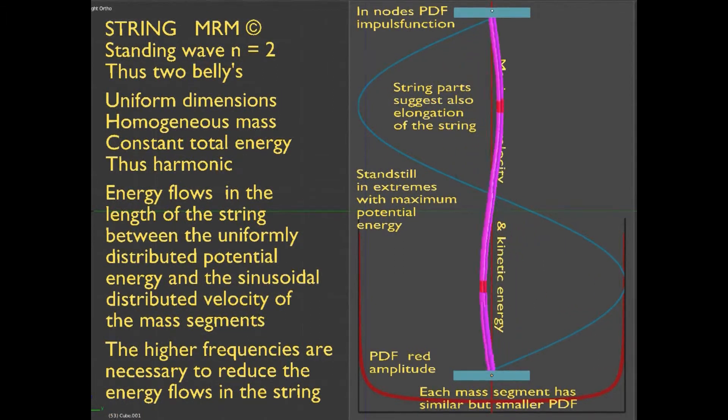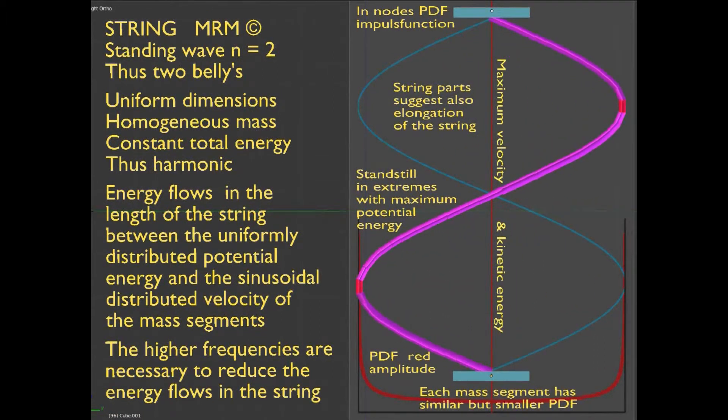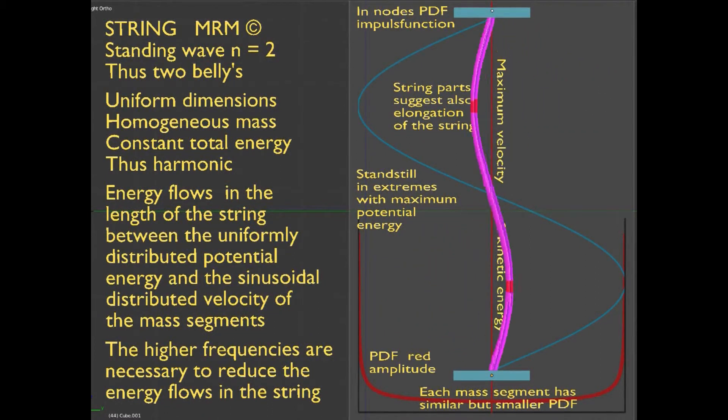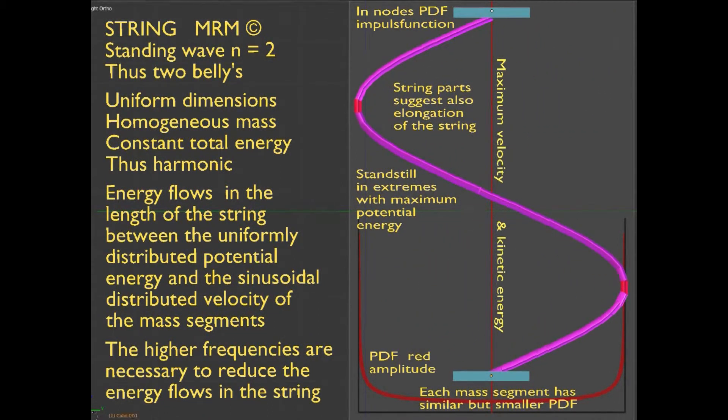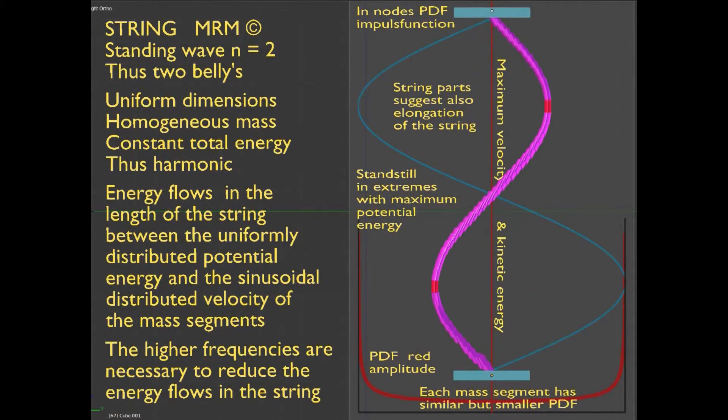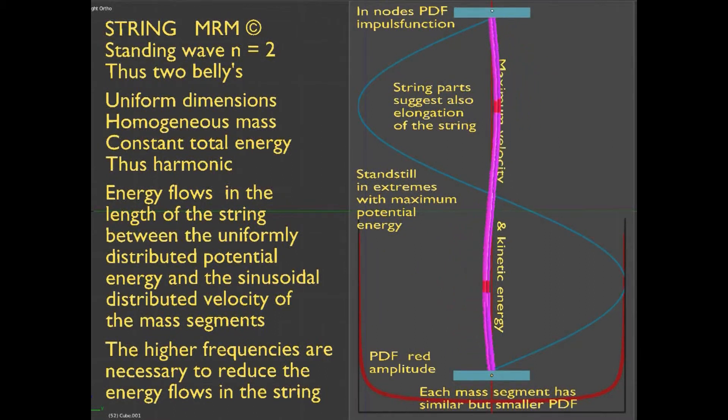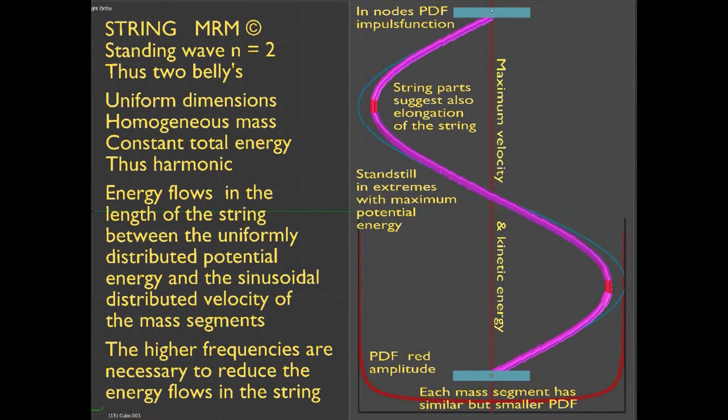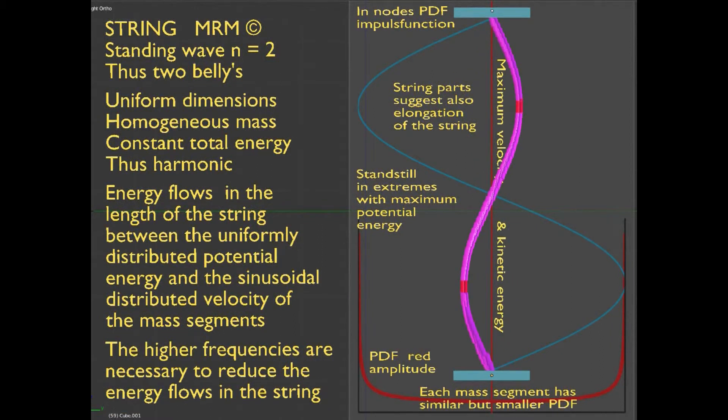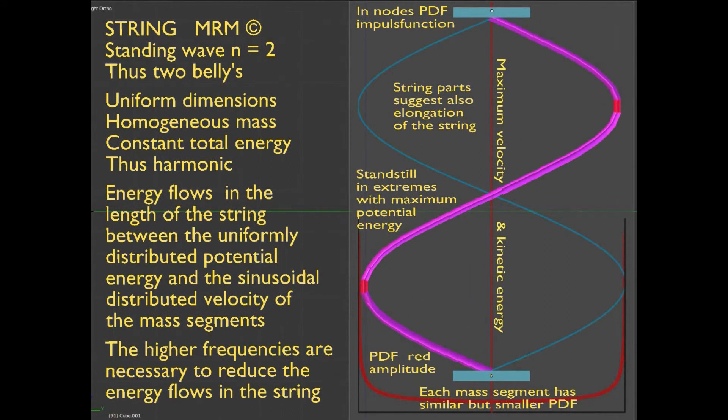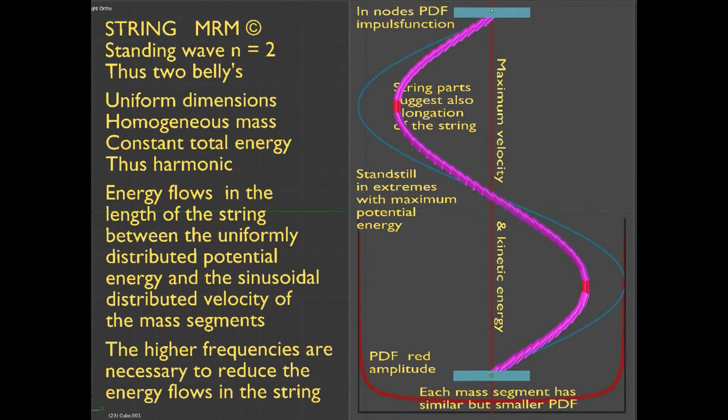With a vibrating string, each mass element has its own classical PDF. The width of this PDF is equal to 2 times the amplitude of that element. With higher frequencies, the energy in a string remains constant and the amplitude reduces with 1 divided by n. The question is then why higher harmonics do actually occur. My own explanation is that it is required to reduce the actual energy flows within the string between the uniformly distributed spring energy and the sinus-square distribution of the kinetic energy.